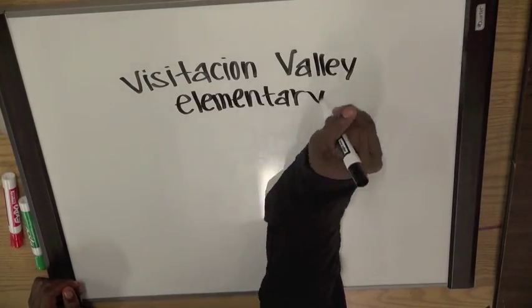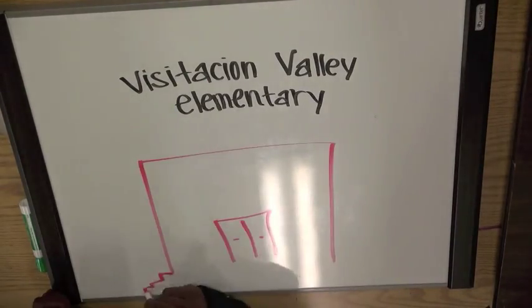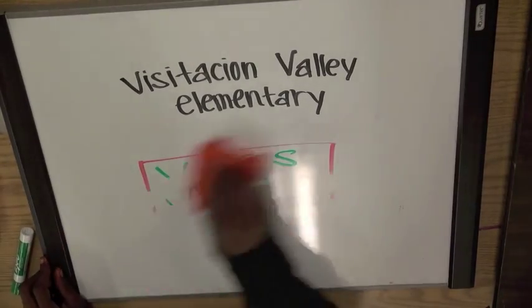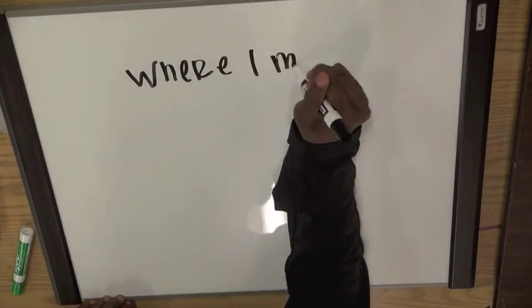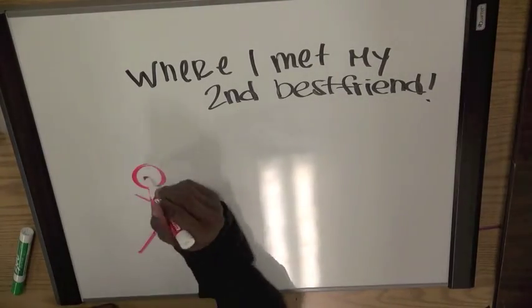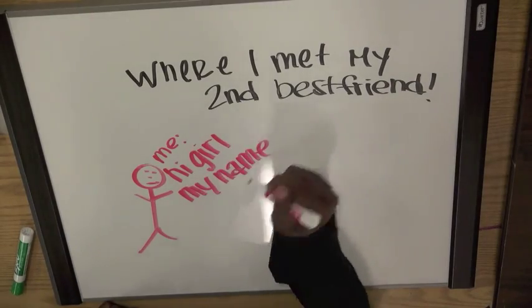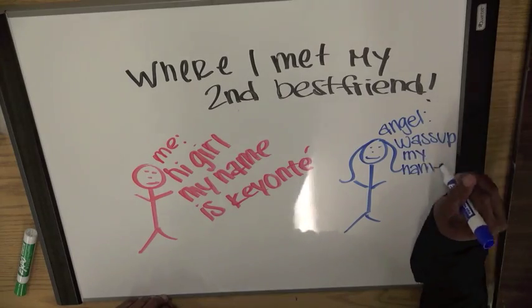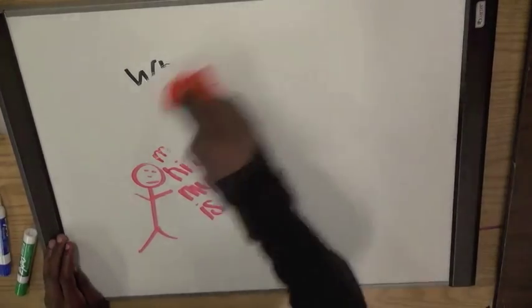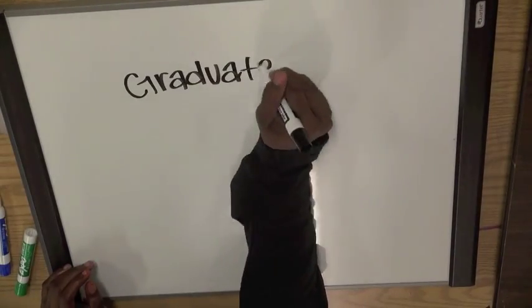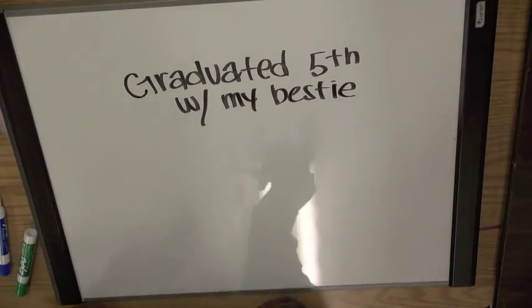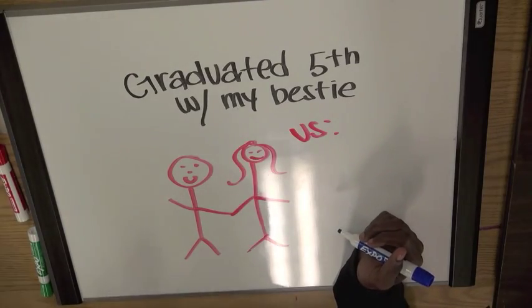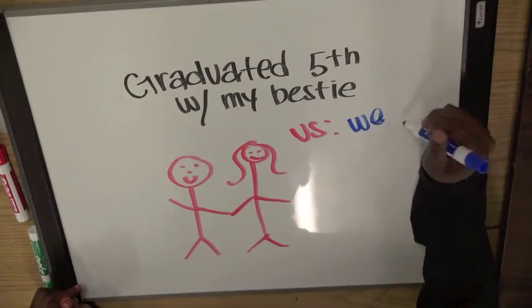In third grade I went to Visitation Valley Elementary School, where I met my second best friend. Her name is Angel and I've been knowing her ever since third grade. We've just been friends ever since. Then I graduated fifth grade with her and it was the best experience because we both had a lot of fun after graduation.